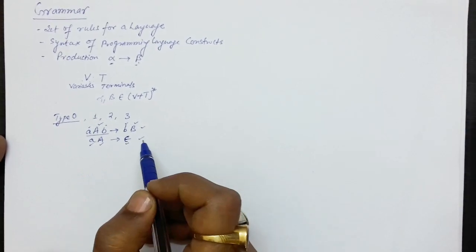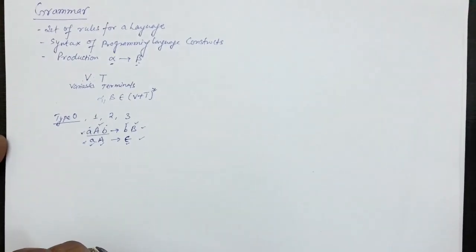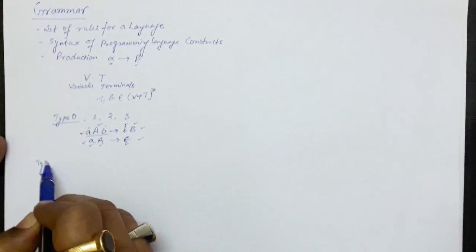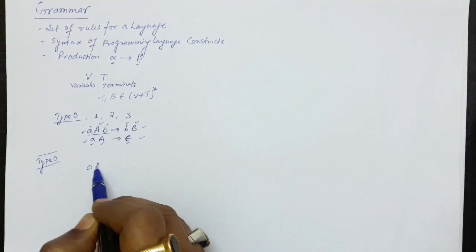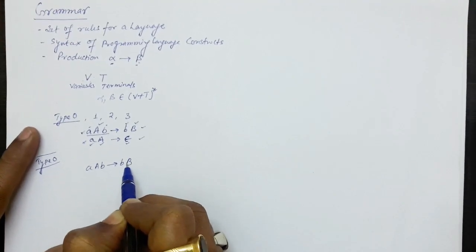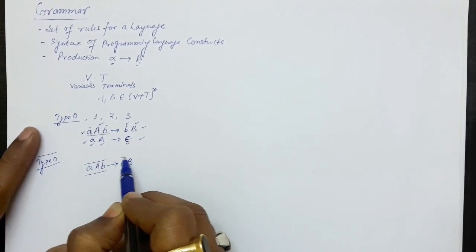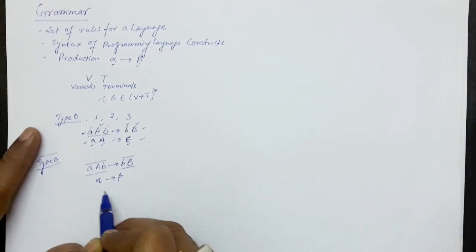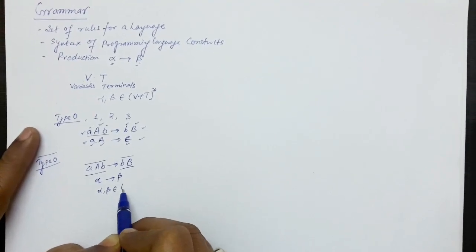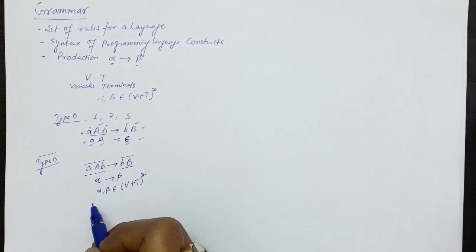Epsilon means nothing, not a terminal symbol. These two productions illustrate how grammars are written for programming languages. Let us start with type 0, in which there is no restriction on how we write these productions. For example, the production AAB produces bB has no rule restricting how variables and terminals are written on either side. The production is simply of type alpha produces beta, where alpha and beta are any combination of variables and terminals. This unrestricted type of writing the grammar is known as type 0 grammar.